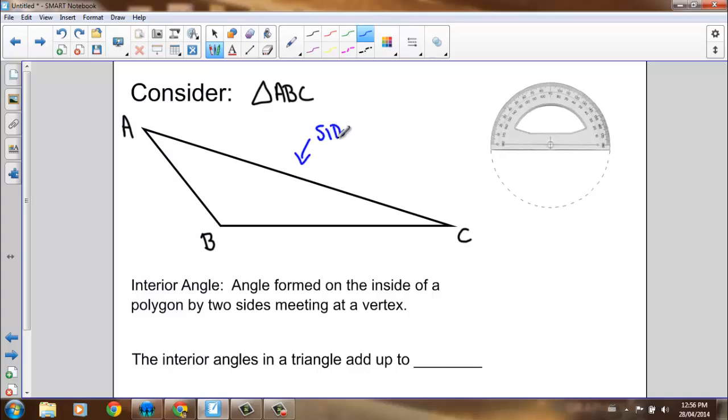So the sides of a triangle are obviously the lines, and where two lines meet, that's a vertex. So if we want to figure out what the interior angles in a triangle add up to, we can measure the angles in the triangle.